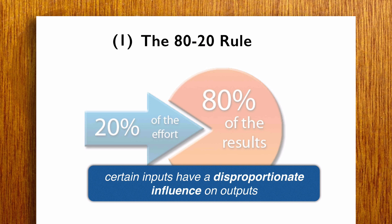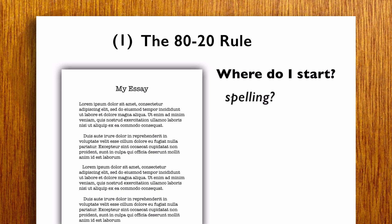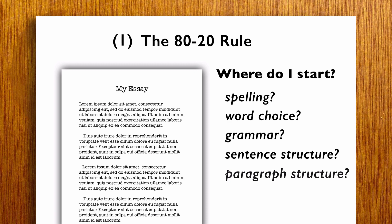Now I want you to consider what an 80-20 analysis would look like when applied to essay writing. When I get an essay from a student that has problems, I've got some choice when it comes to deciding what sort of feedback would be most helpful. Most essays have a mixture of problems — problems with spelling, word choice, grammar, sentence structure, paragraph structure, and so on, all the way up to overall essay structure and organization. I could start anywhere; I could fill out the pages with red marks just focusing on grammar and style issues alone.